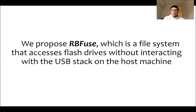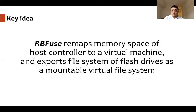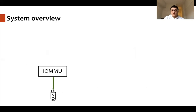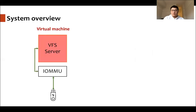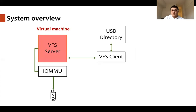In this work, we propose RBFUSE, which is a file system that accesses flash drives without interacting with the USB stack on the host. The key idea is that we remap the memory space of the USB controller to a virtual machine, and export the file system of flash drives as a mountable virtual file system. In our system, with IOMMU, the flash drive is connected to a virtual machine and it runs a VFS server. And on the host side, we run a VFS client, and the flash drive is exported to the user as a USB directory.